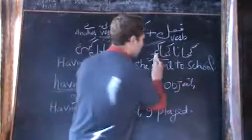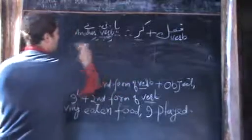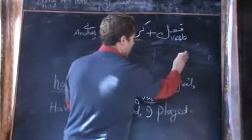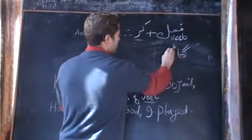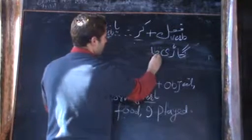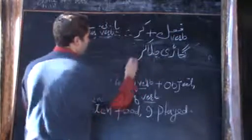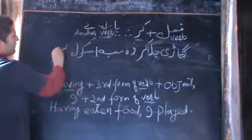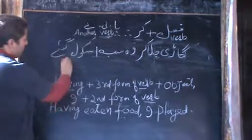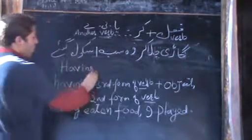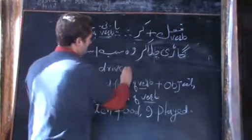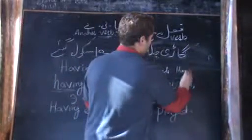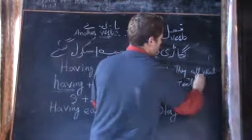Now I will give an example from the plurals so you can understand better. 'Gadi chala kar wo sab school gayi.' This will be started with the same 'having': having driven a vehicle, they all went to school.